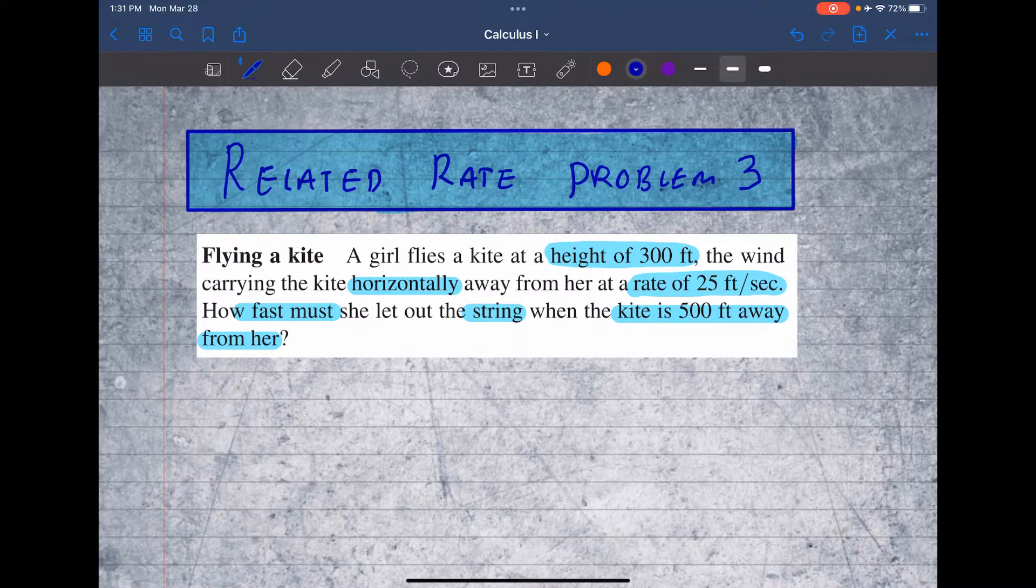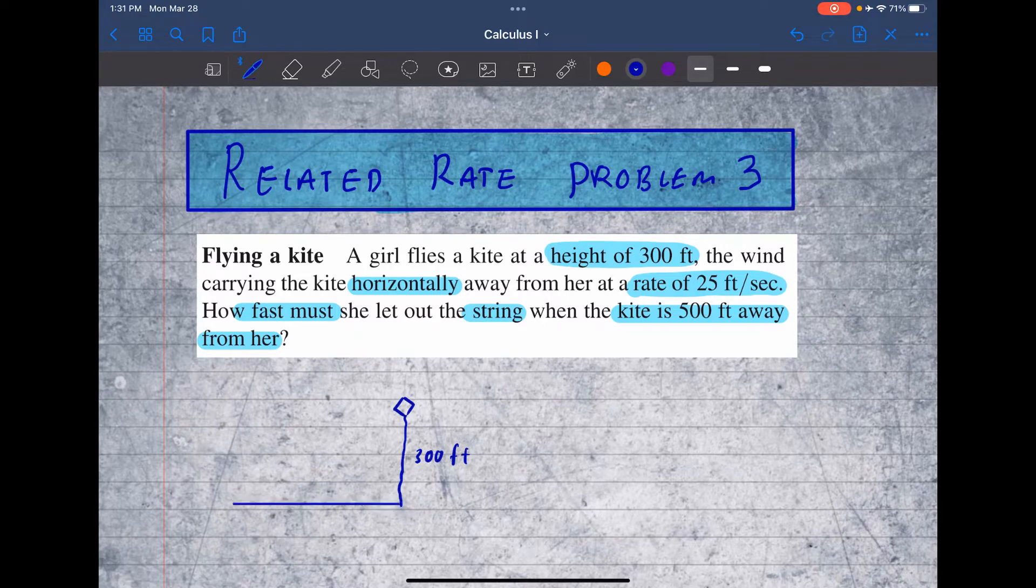Let's suppose here's the kite something like that. So it's 300 feet above the ground. So that's 300 feet here. And then let's suppose she's standing right here. Let's suppose that's the person. And she's flying this kite.